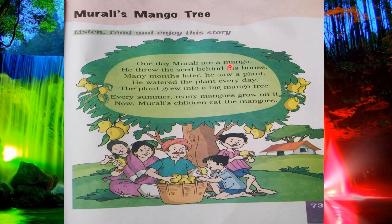One day Murali ate a mango. He threw the seed behind his house. After many months, he saw a plant where he threw the seed — behind his house. He watered the plant every day. The plant grew into a big mango tree. Every summer, many mangoes grow on it.